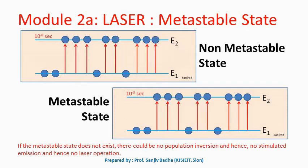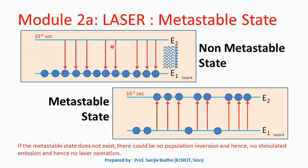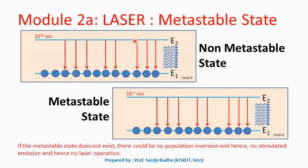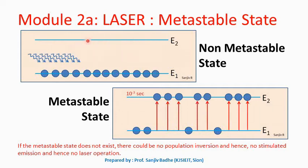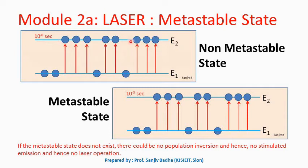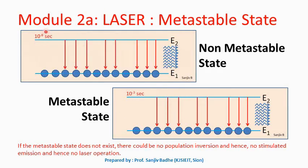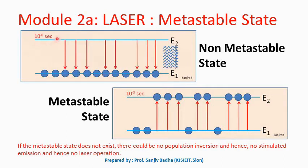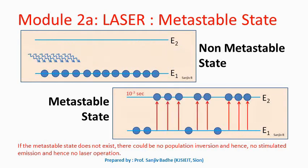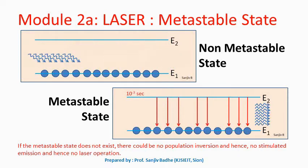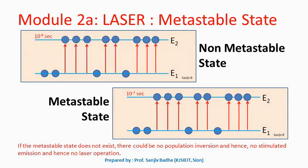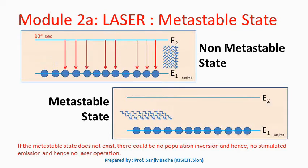But here there is one problem. If we supply energy to the atoms in the lower energy level, they will go to the higher energy level. But they will not stay in the higher energy level forever. They will remain there only till their lifetime in the higher energy level gets over. For a normal state, the lifetime is of the order of 10 raised to minus 8 seconds. So atoms stay in the higher energy level only for this short duration, and once their lifetime gets over, they will immediately make a transition into the lower energy level and spontaneous emission of radiation will occur.